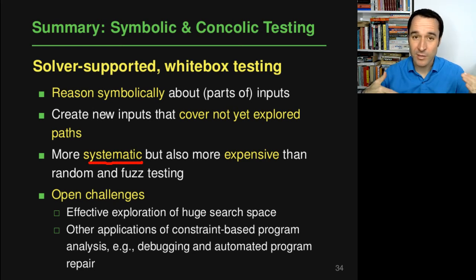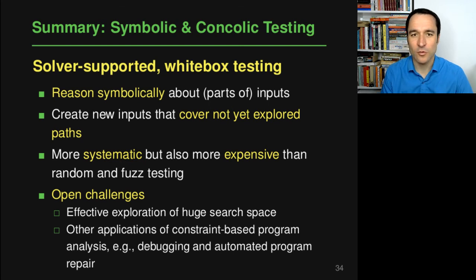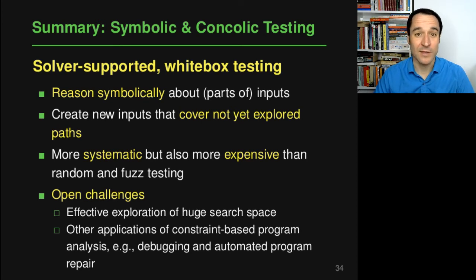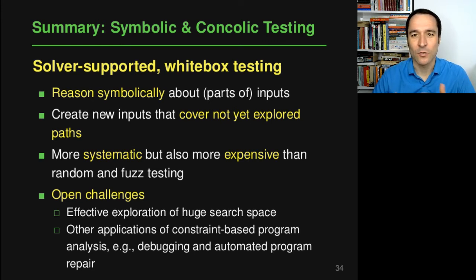There's a trade-off between being systematic and being more probabilistic, because systematic approaches like symbolic and concolic testing are typically more expensive. There's no free lunch, and in practice each approach can work well depending on what kind of program you're analyzing and what kind of behavior you're trying to trigger.